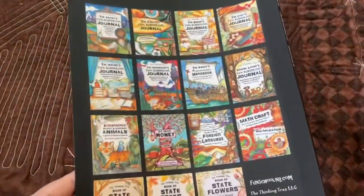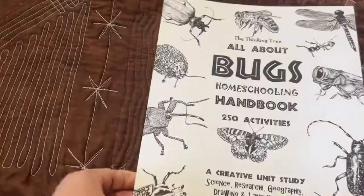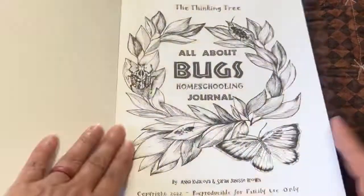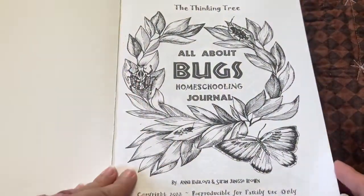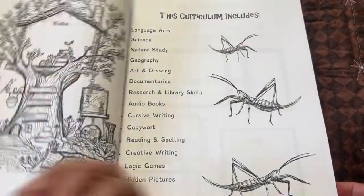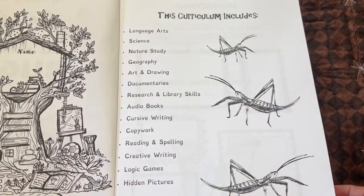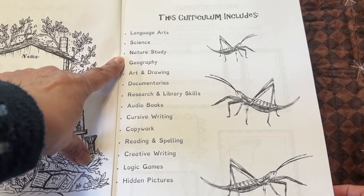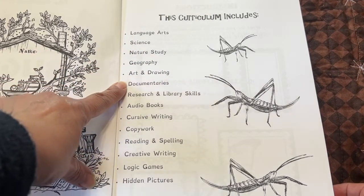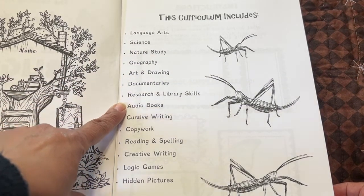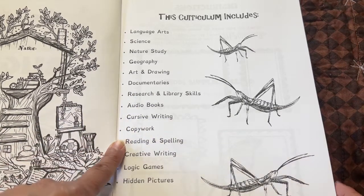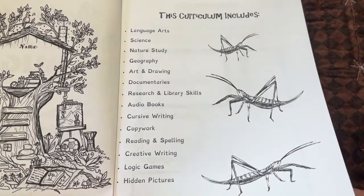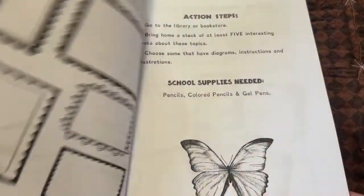That's how the back looks. This curriculum includes Language Arts, Science, Nature Study, Geography, Art and Drawing, Documentaries, Research and Library Skills, Audiobooks, Cursive Writing, Copywork, Reading and Spelling, Creative Writing, Logic Games, and Hidden Pictures.